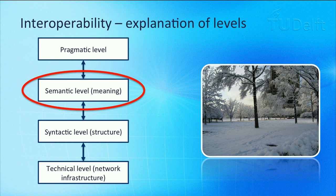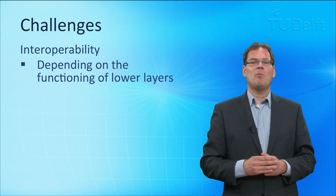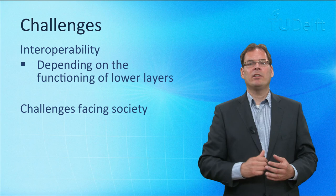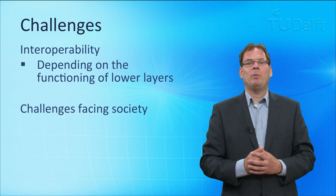On all the interoperability levels we have seen challenges, and higher layers depend on the functioning of the lower layers. There are many challenges facing our society. For example, somebody could take over your washing machine and make it use energy only when the price is high instead of when it is low — this might cost you a lot of money. Or even worse, a hacker could make the drum turn faster and faster until there is a fire. Professor Michel van Eten will tell you more about the security aspects.